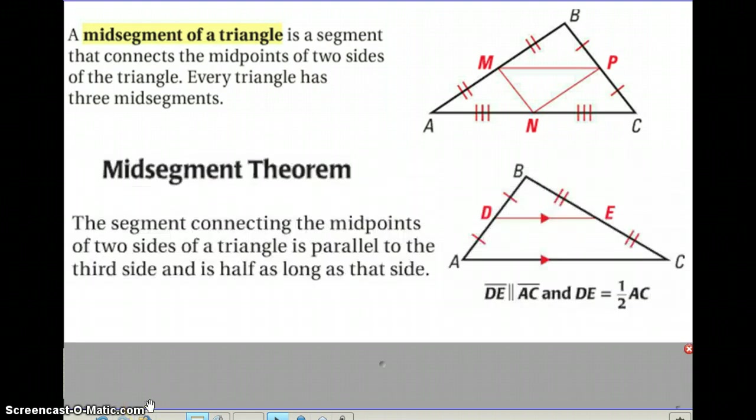There are two very important traits about the midsegment. Both of these traits are stated in the midsegment theorem. The theorem states the segments connecting the midpoints of two sides of a triangle will be parallel to the third side and will also be half as long as that side. These two traits are very important to remember. The midsegment will always be parallel to the third side. That means the side that it is not touching. Therefore in this case, DE is going to be parallel to AC because they are not the intersecting sides of the triangle. Lastly, this is also key: half as long as that side. So DE will be half as long as segment AC.